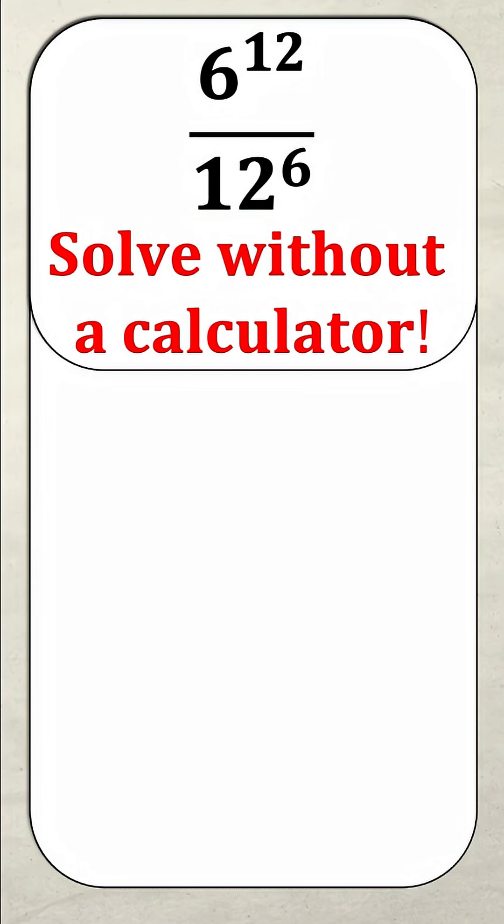So the first thing we need to do is simplify this, because at face value, 6 to the power of 12 divided by 12 to the power of 6 is going to be too much for you to calculate in your head without simplification.